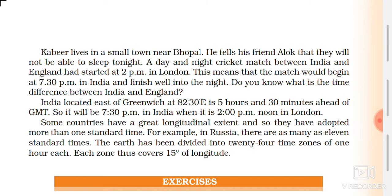India, located east of Greenwich at 82 degrees 30 minutes east, is 5 hours and 30 minutes ahead of Greenwich time. So it will be 7:30 pm in India when it is 2 pm noon in London.